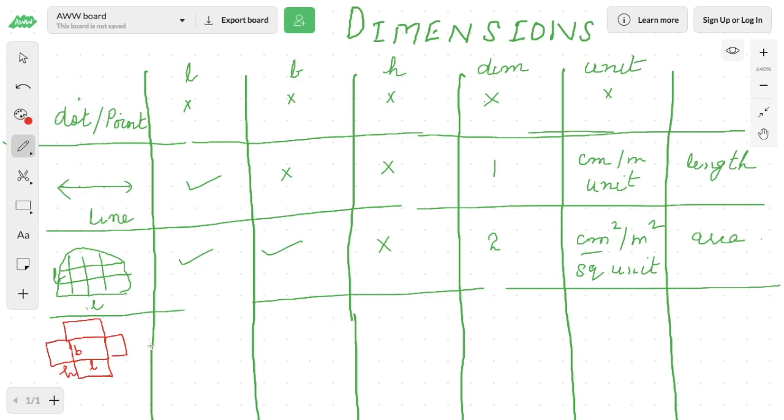It has length, width, and height. So length, also it has width also, and does it have height? Yes. So how many dimensions does it have? L, B, H - three dimensions, and its unit is centimeter cube or meter cube or any cube.